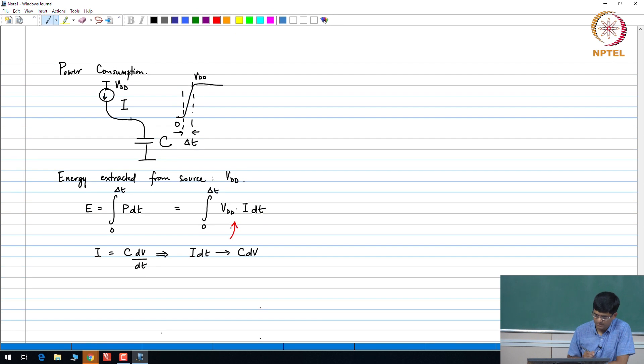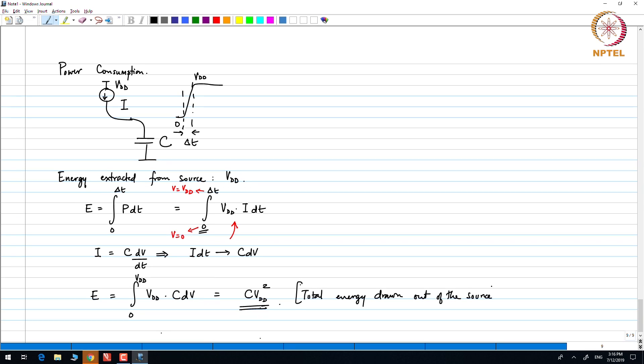So, by changing variables, essentially what we end up with is at time 0 this corresponds to V equal to 0, and at time delta t this corresponds to V equal to VDD. So, let us put that in and say that we are essentially going to say the energy becomes an integral from 0 to VDD of VDD into C DV, which can be evaluated to C VDD squared. This is the total energy drawn out of the source.